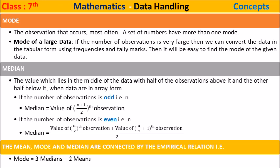For an even number of observations, the median is the mean of the (n/2)th and the (n/2 + 1)th observations, divided by 2. The mean, mode, and median are connected by the empirical relation: Mode = 3 × Median − 2 × Mean.